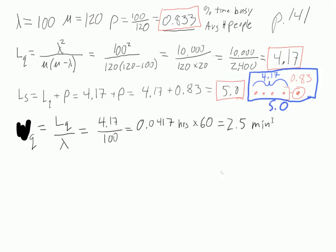So that's why I come out with exactly 2.5 minutes. If you rounded the 4.17 to just 4.17, you'll come up with something not exactly 2.5, but that's okay. So that is how long people spend in the queue.